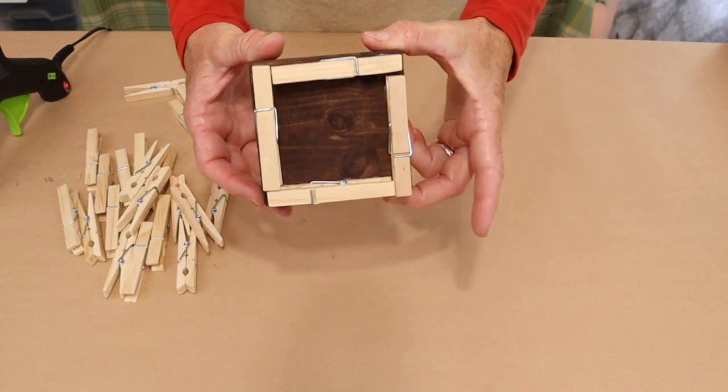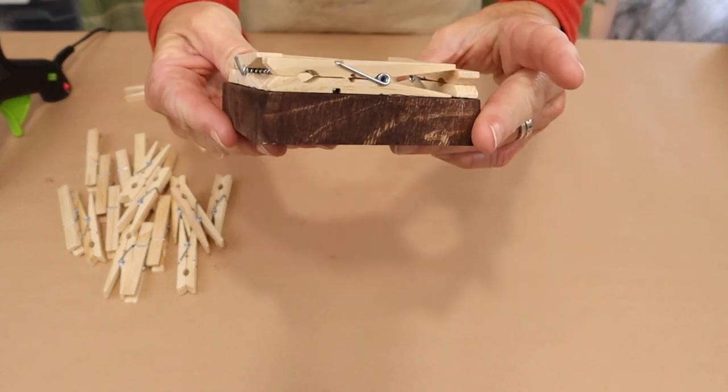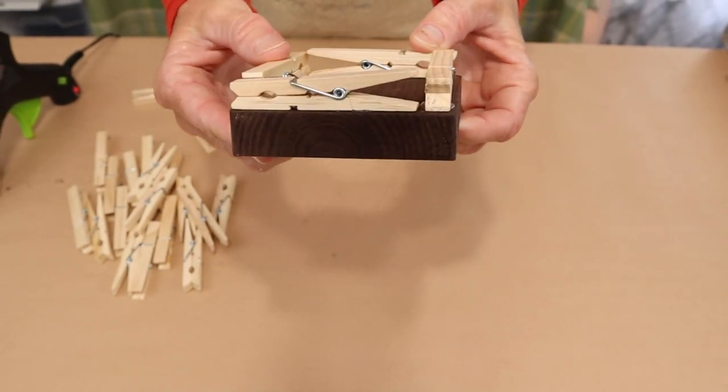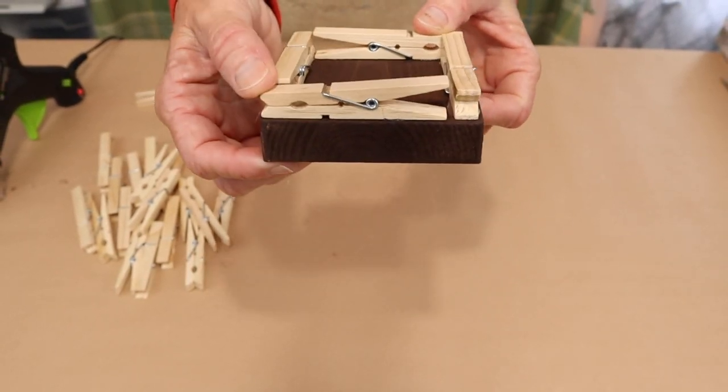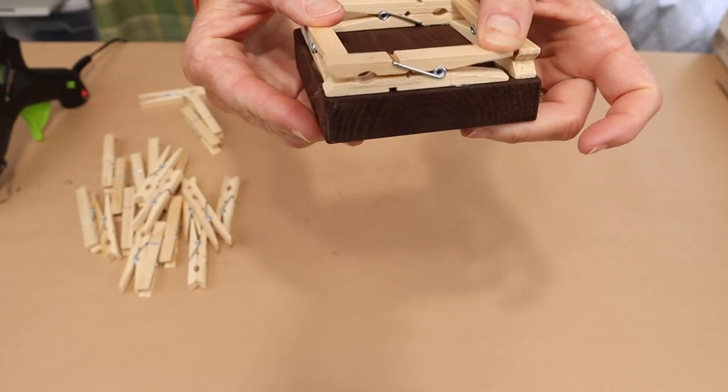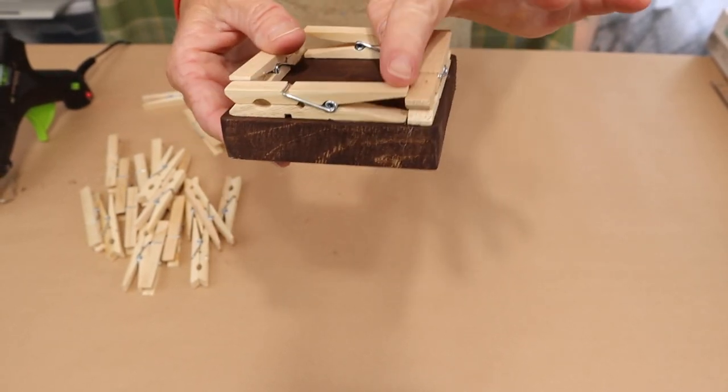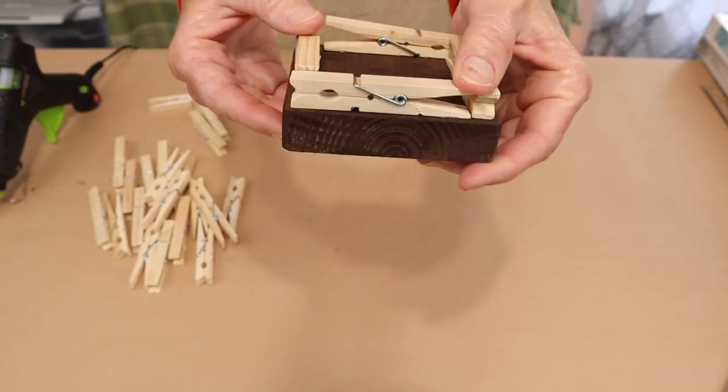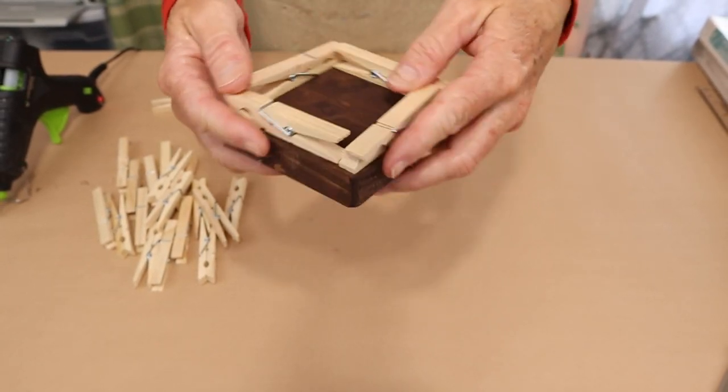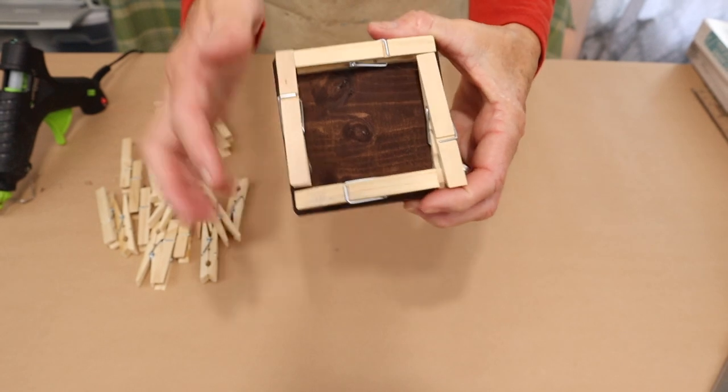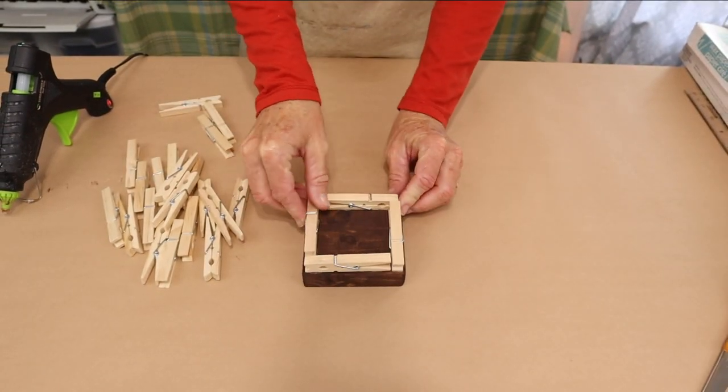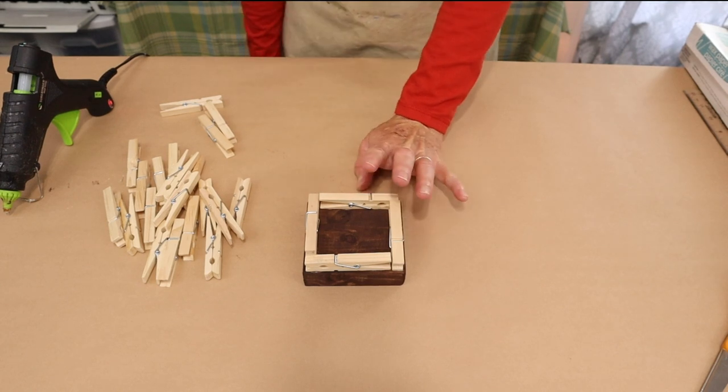And now, as you'll see, they're end to end. So you want to put the pinchy side, this side, to the back of the other clothespin. So you're going to be going in a circle, or a square actually, like that. So now, we're going to move on to our second layer of clothespins, and so on.